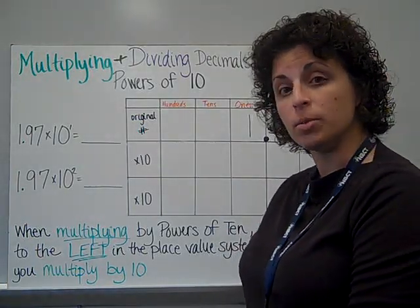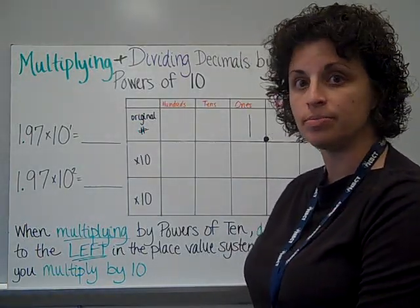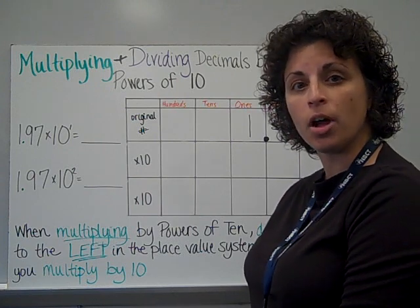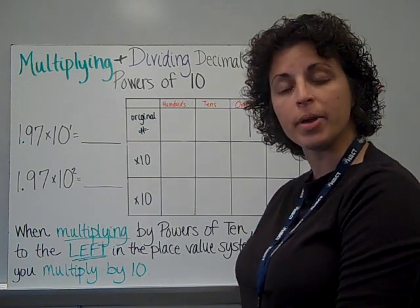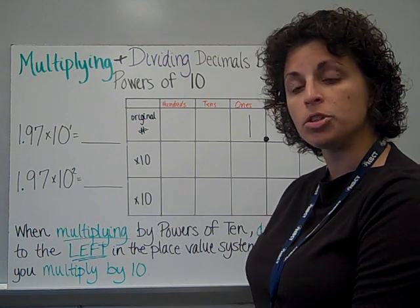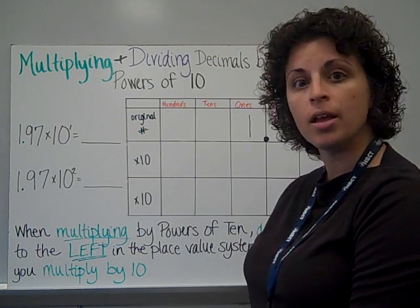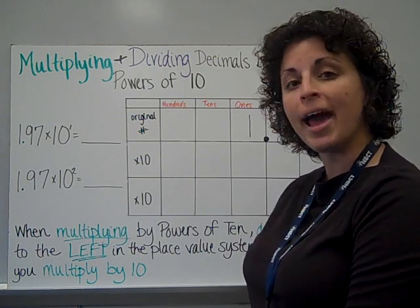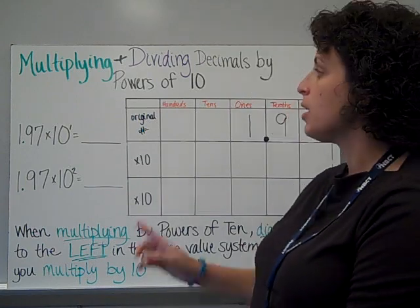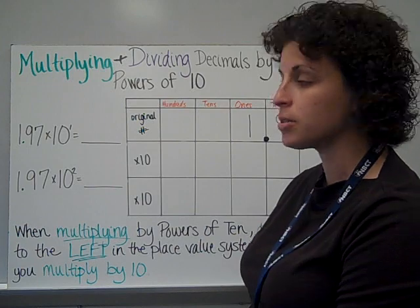Multiplying and dividing decimals by powers of 10. We've talked earlier this year about how our number system is a base-10 number system, and so every time we multiply or divide by 10, there's a certain pattern that occurs. The same is true with decimals. Let's see how this works.